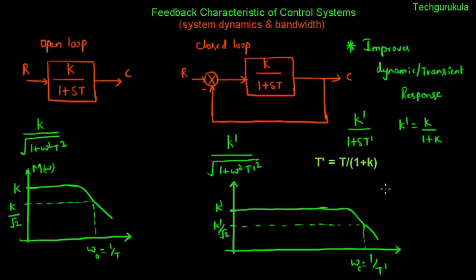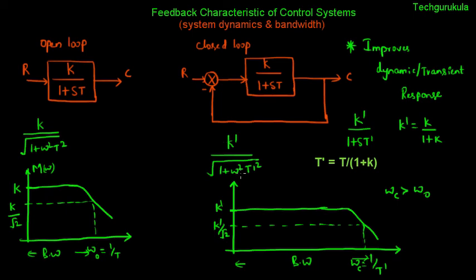We know that ω_c is definitely much greater than ω_o, meaning the closed loop system bandwidth is much wider. This is mainly because the time constant T prime is less than T, which improves the dynamic or transient response and also improves the bandwidth. To conclude, negative feedback improves bandwidth as well.